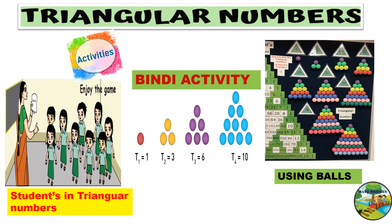These triangular numbers can be explored through different activities. The easiest one is a bindi activity — you can ask children to bring some colorful bindis available at home and form the triangular numbers using them. They can also use crayons or color pencils. On a softboard it can be displayed using balls, bangles, paper cups, caps, or anything similar. A group activity can also be taken up in class by the teacher — if she says 4, the group of children forms the triangular number with base 4; if 5 is called, they form 5, 4, 3, 2, 1. It will be great entertainment and a lot of learning also takes place in the class.